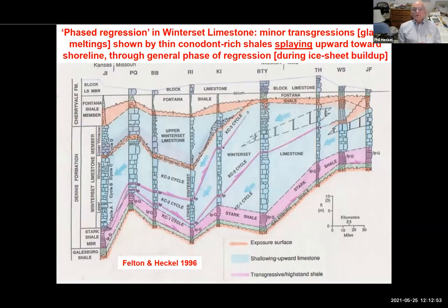This shows phased regression in the Winterset limestone — minor transgressions from glacial meltings after the huge Stark transgression at the base. Glacial buildups are phased with minor transgressions in between, and we have the Stark Shale at the top of Kansas City splitting off and penetrating, splaying upward and separating the thick regressive limestones of the Winterset limestone.